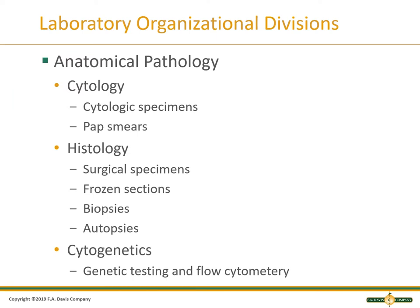There are two major sections of the laboratory. The first section is the anatomical, which includes cytologists who perform pap smears, and histotechnicians, who prepare specimens for pathology review by placing thin slices of tissue removed from people's bodies onto a slide and staining them. Cytogenetics may include genetic testing and flow cytometry.